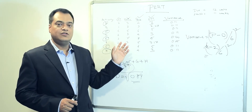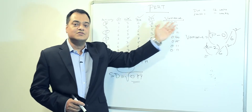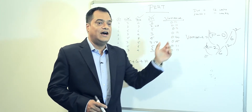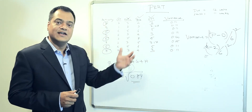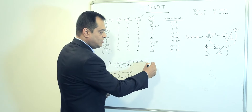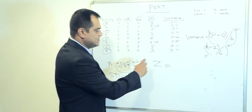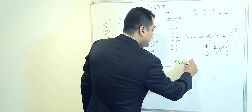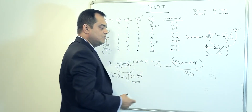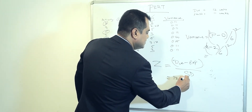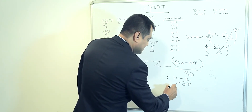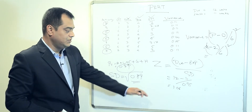The whole idea of PERT is to find the probability of our expected value. The due date is 12 weeks and we expect to deliver in 11 weeks. To find the probability, we calculate the Z value from the normal distribution table: Z equals due date minus expected date, divided by standard deviation. That gives us 12 minus 11 divided by 0.95, which equals approximately 1.06.